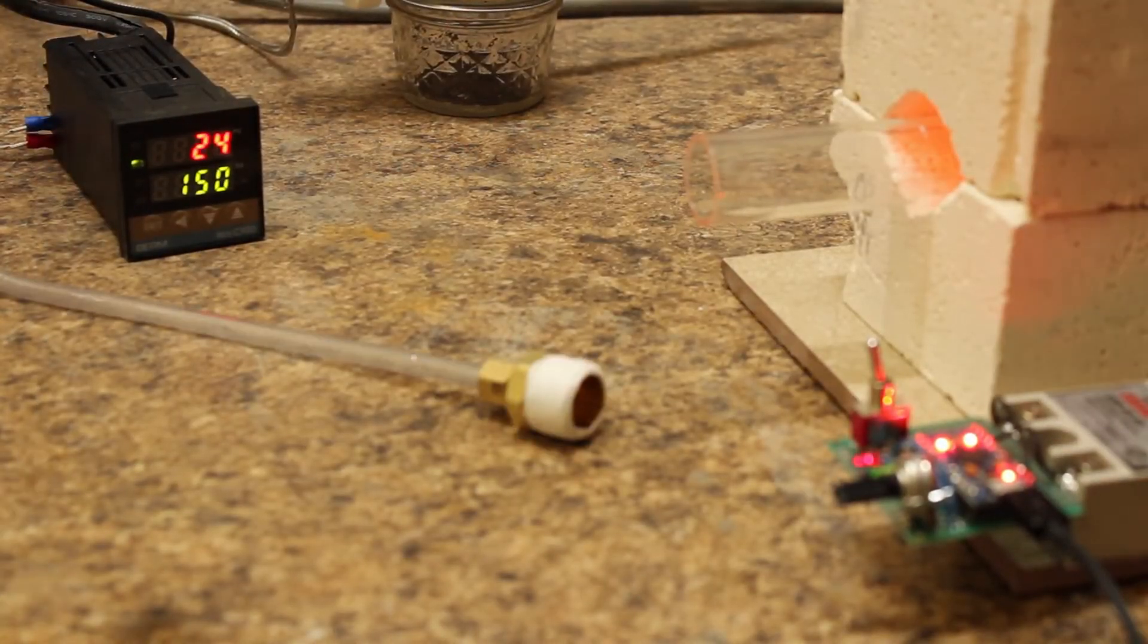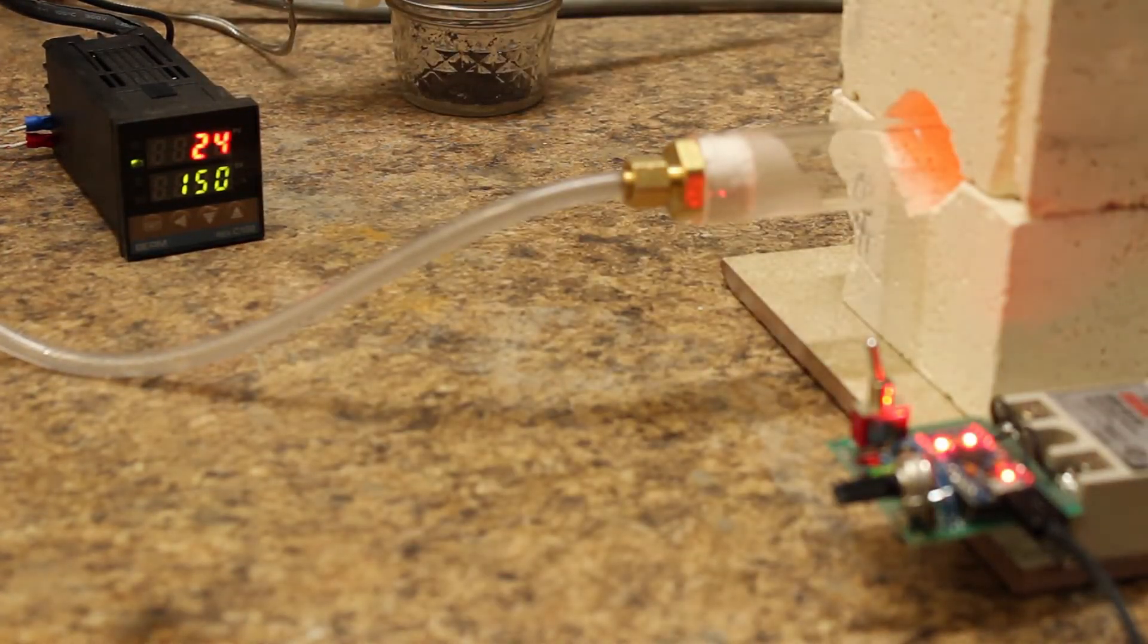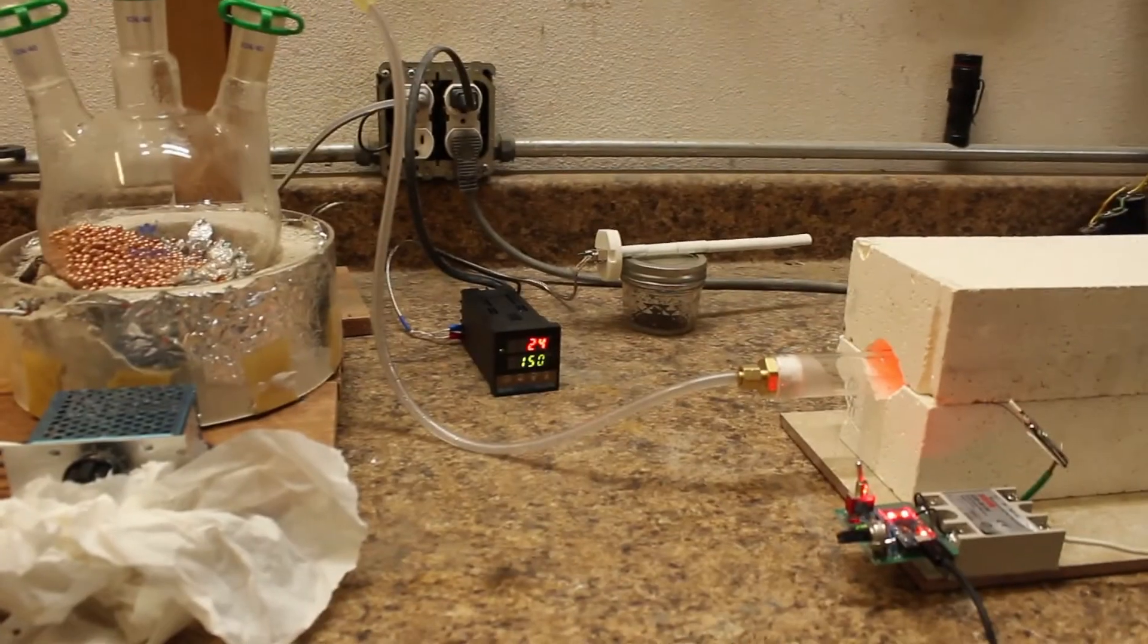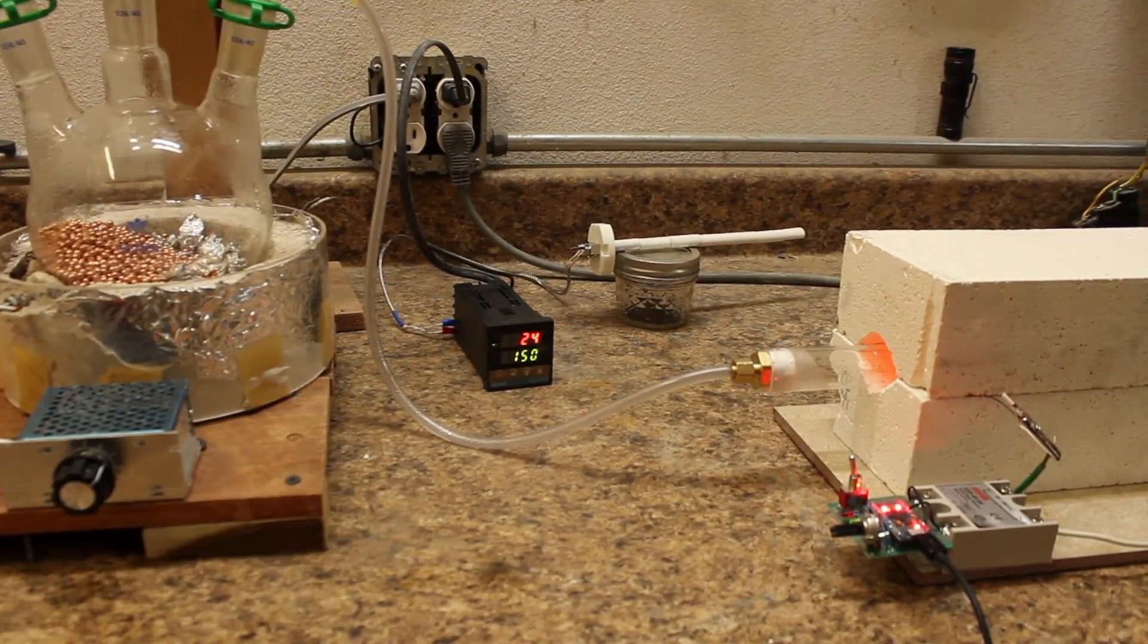Once we have all our equipment set up we can insert the substrate into the furnace and attach the hose from our steam generator. We leave the system like this for about an hour. This should give us an oxide thickness of about 500 nanometers according to our graph.